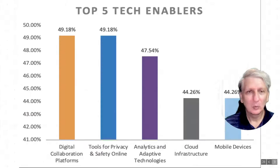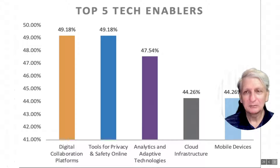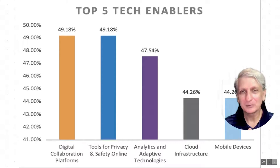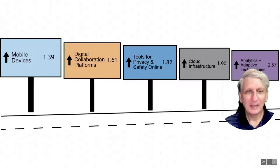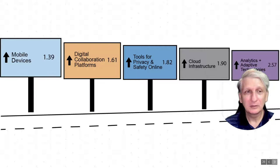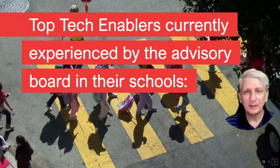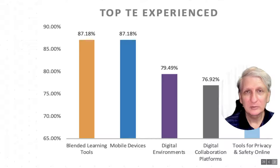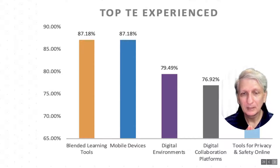From the Delphi study that the board undertook, the most important technologies for schools were digital collaborative platforms — tools that allow students, teachers, and school organizations to work together — tools for privacy and safety online, analytic and adaptive technologies, cloud infrastructure, and mobile devices. In terms of worldwide adoption, mobile devices were considered probably the most significant one. For the advisory board individually in their own schools, they saw blended learning tools, mobile devices, the digital environment within the school, digital collaborative platforms, and tools for privacy and safety online as the most significant.